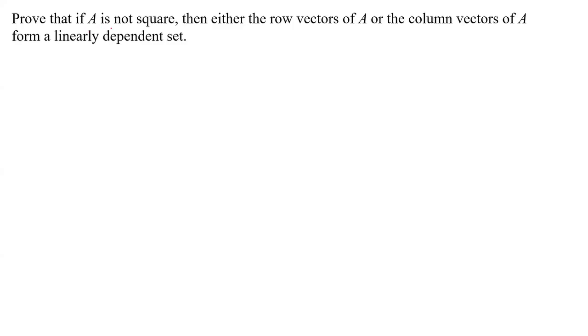Prove that if A is not square, then either the row vectors of A or the column vectors of A are linearly dependent.